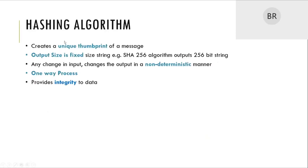The output size — the thumbprint — is fixed. Whatever the size of the input may be, whether one character or millions of characters or even several MBs or GBs, the output will be a 256-bit stream only. Any small, minor change to the input will produce the output in a non-deterministic manner — you will not be able to determine what the output will be. These are the strengths of the cryptographic hashing algorithm.